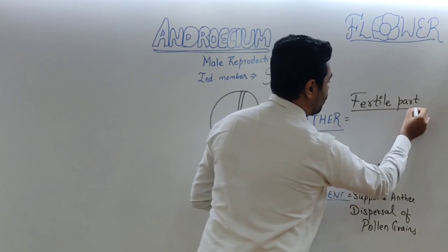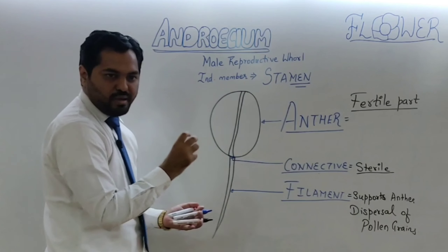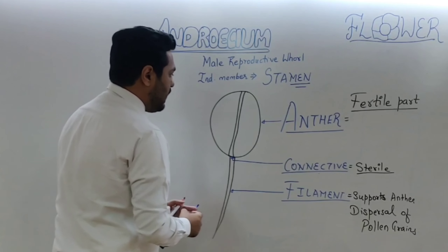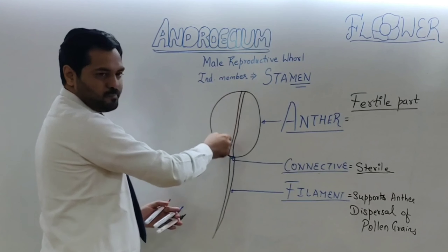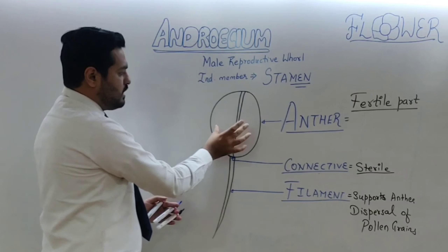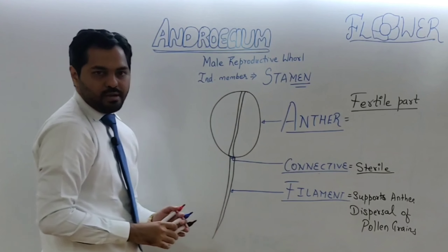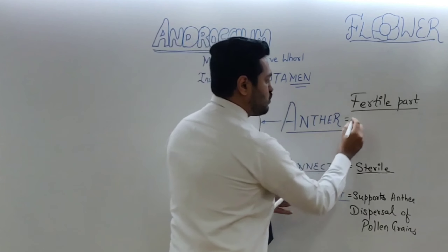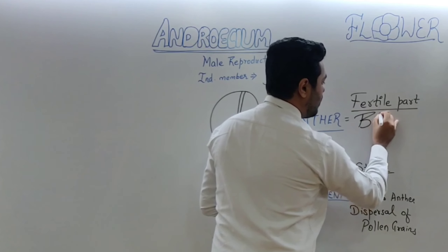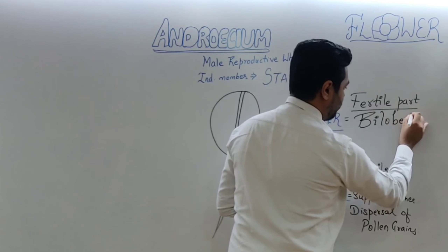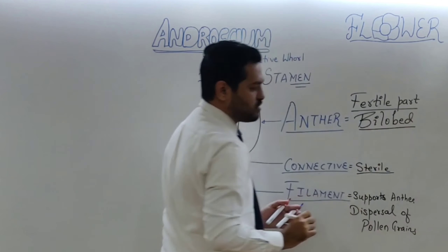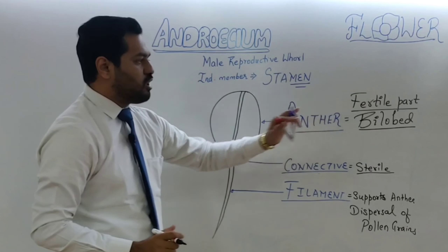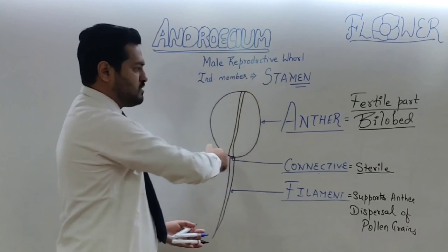The anther has the major role in reproduction — it is the main male reproductive component. The anther has a single partition inside it, which gives rise to two compartments. Because of this, the anther is called a bilobed structure. In most angiosperms, the anther is bilobed due to this single partition.